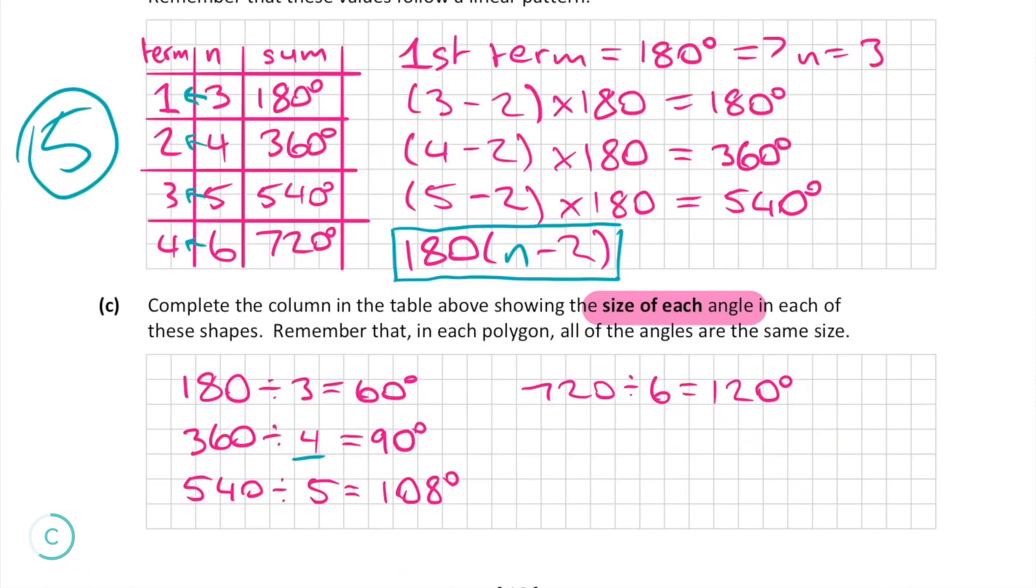When we do this we can see that in the polygon that has four angles each of these angles is 90 degrees. This is fairly obvious seen as a polygon that has four angles is just a square.